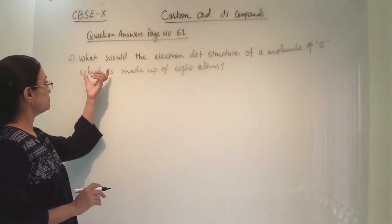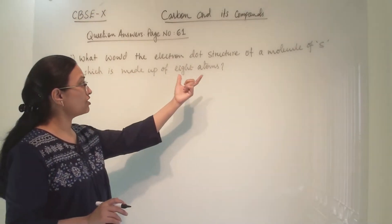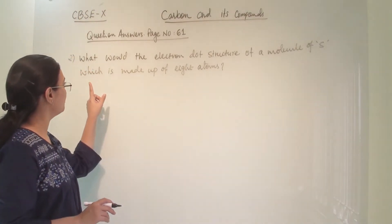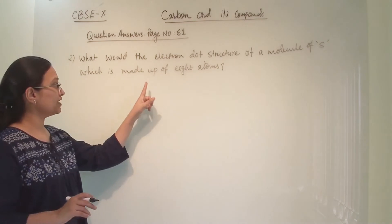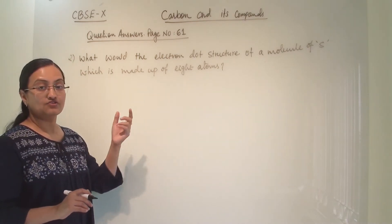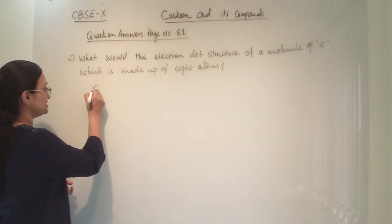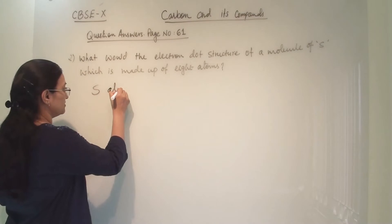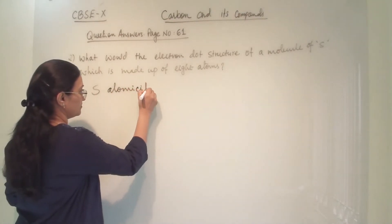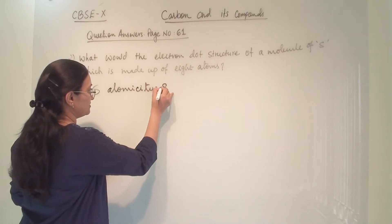So in the carbon dioxide molecule, there are 2 double bonds between carbon and oxygen. Our second question is: what would be the electron dot structure of a molecule of sulphur, which is made up of 8 atoms? So sulphur's atomicity is 8.